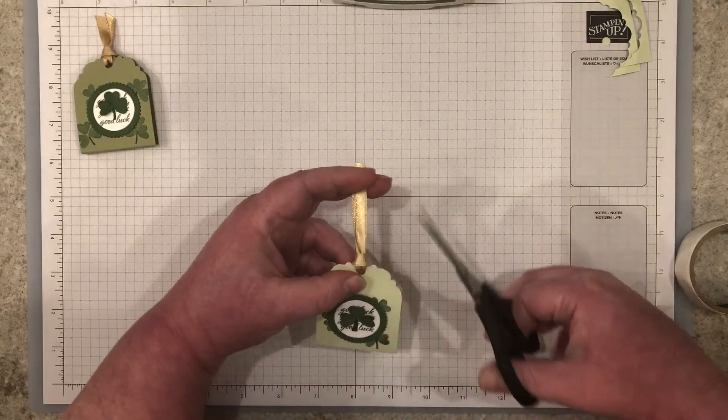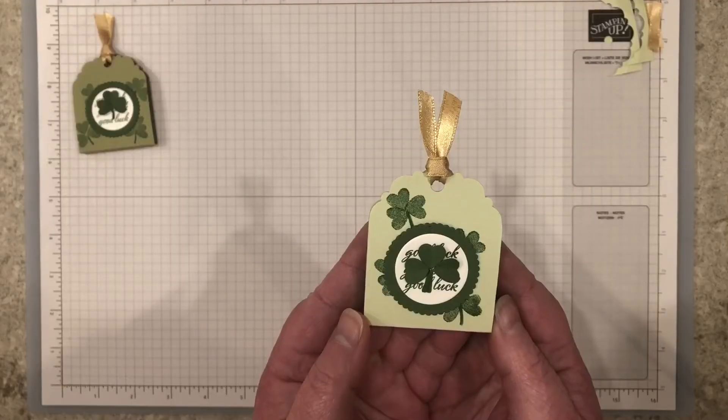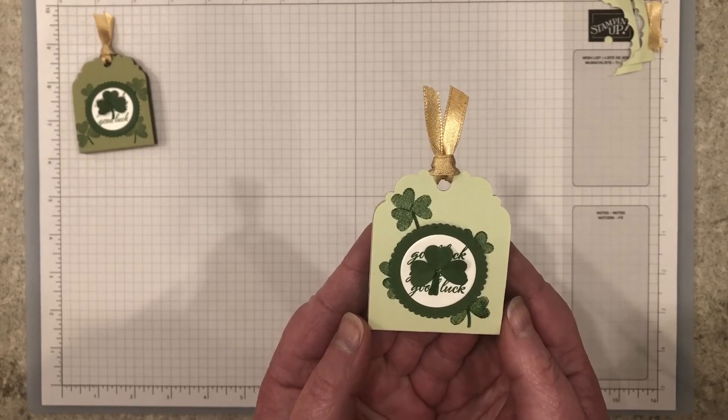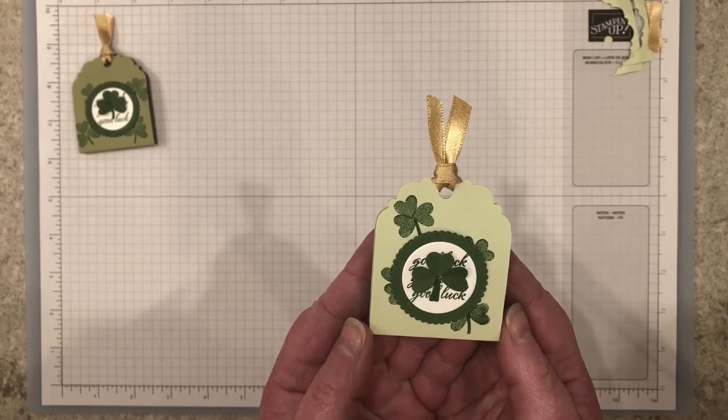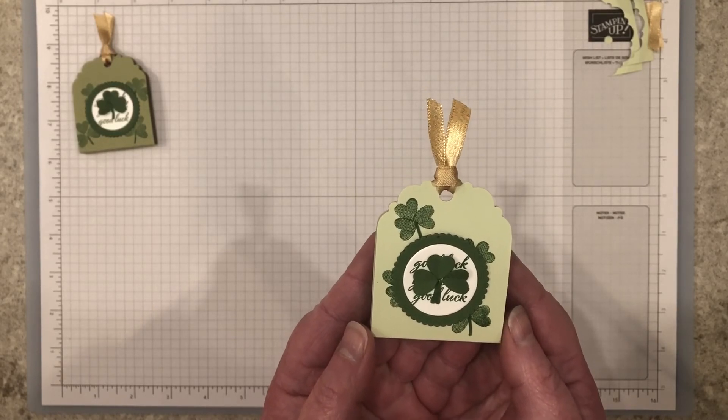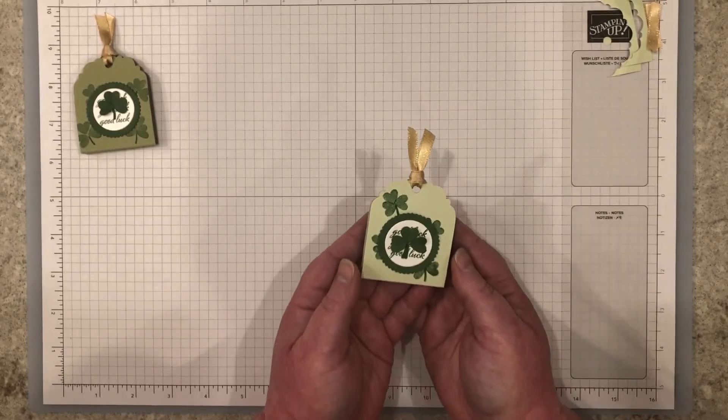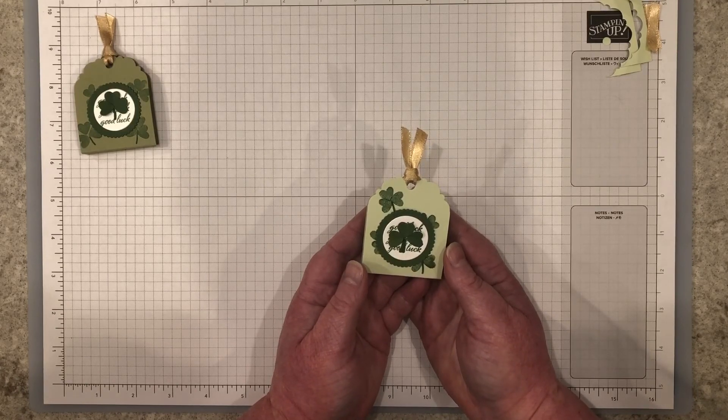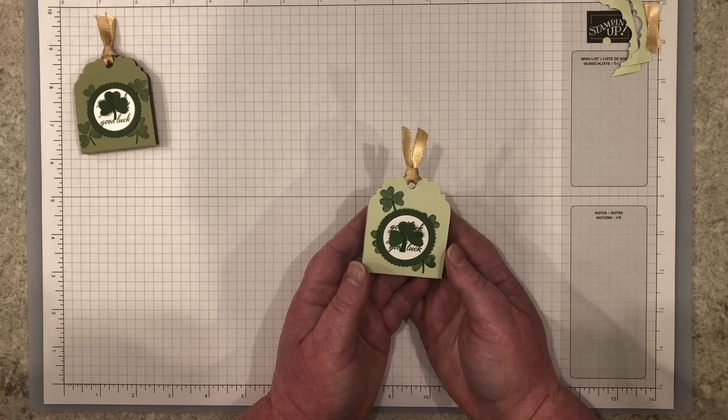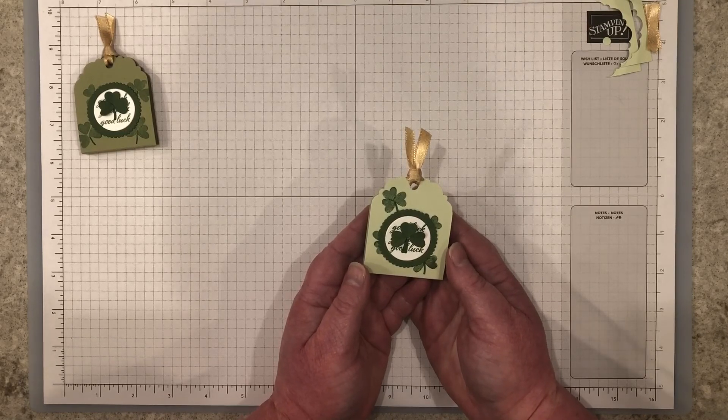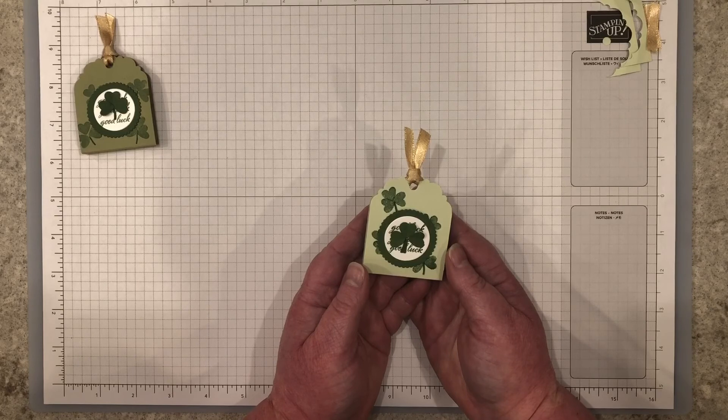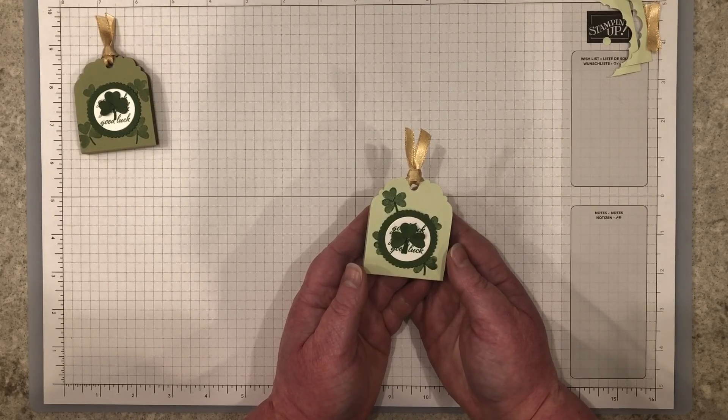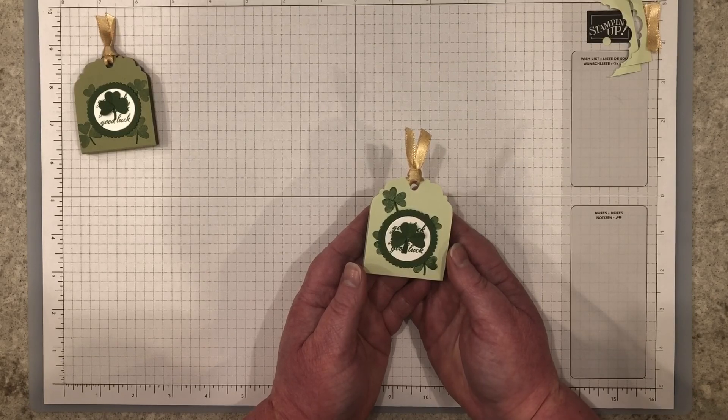Lastly, trim your ribbon ends at an angle. And there you have it, a sweet treat holder to celebrate St. Patrick's Day. I hope you give this treat holder a try. The link to the companion blog post that has the supply list and the measurements is listed in the description box below. If you need supplies to make today's project, you can shop my online store 24-7. If you have questions about today's project, please leave a comment below. I'm happy to assist you with your stamping questions. Thanks again for spending time with me today. Until next time, happy stamping!